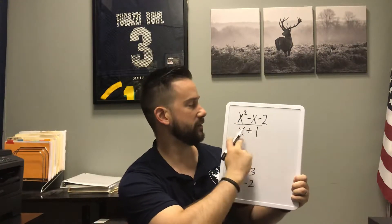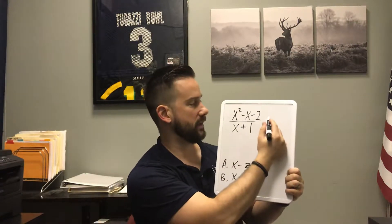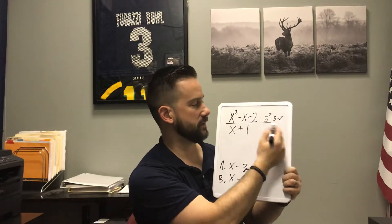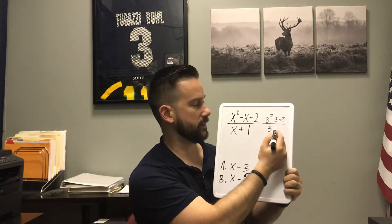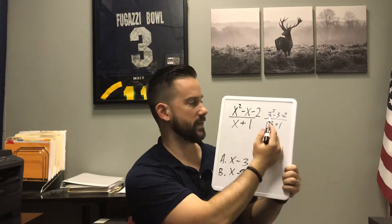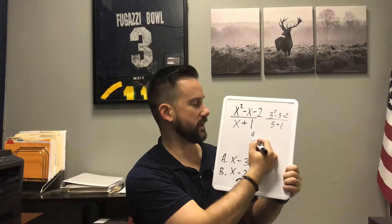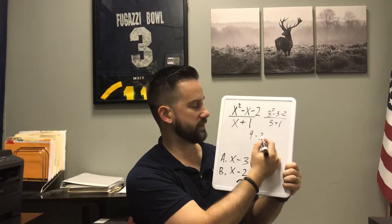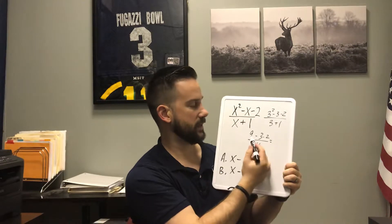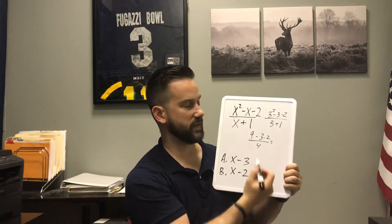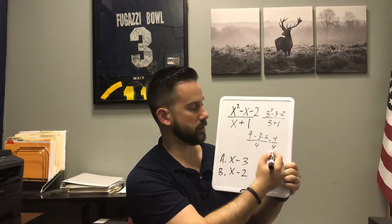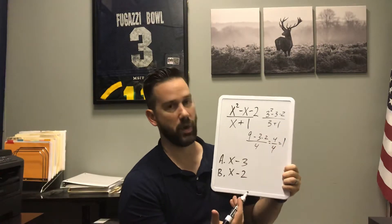We put 3 in for x, so we get 3 squared minus 3 minus 2 over 3 plus 1. So 3 squared is 9, minus 3 minus 2, over 3 plus 1 which is 4. So 9 minus 3 is 6, then minus 2 is 4. We get 4 over 4, which is 1.